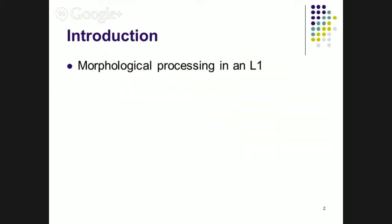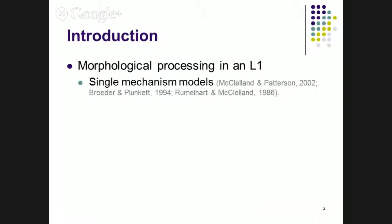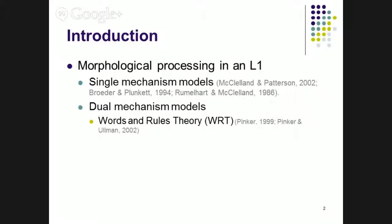So let's go over some of the theoretical proposals that have been made for how that might happen in a first language, starting out with single-mechanism models, which propose that all forms, regular or irregular, are stored in a singular pattern associator network. So the distinction between the grammar and the lexicon might be descriptively useful, but it's not a psychologically valid distinction. Dual-mechanism models propose just the opposite. There is such a distinction psychologically. One such model is Steven Pinker's words and rules theory, which posits that words are going to be stored in the lexicon, and that includes most irregular words. Regular words, however, can be stored or they can be computed by way of morphological rules. So there's the grammar.